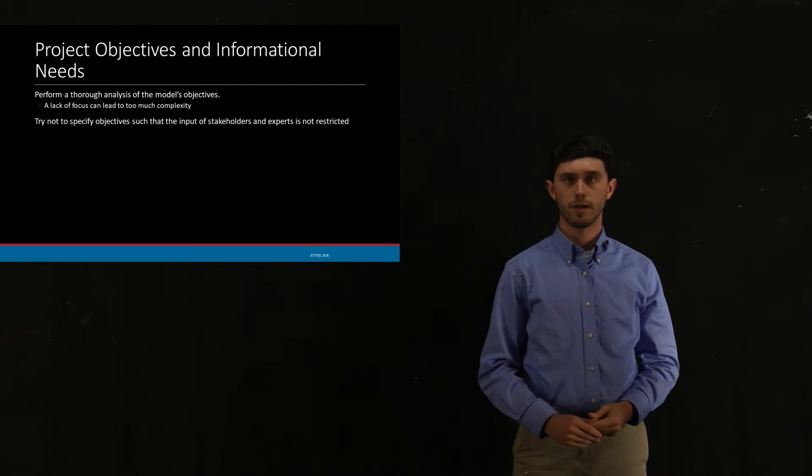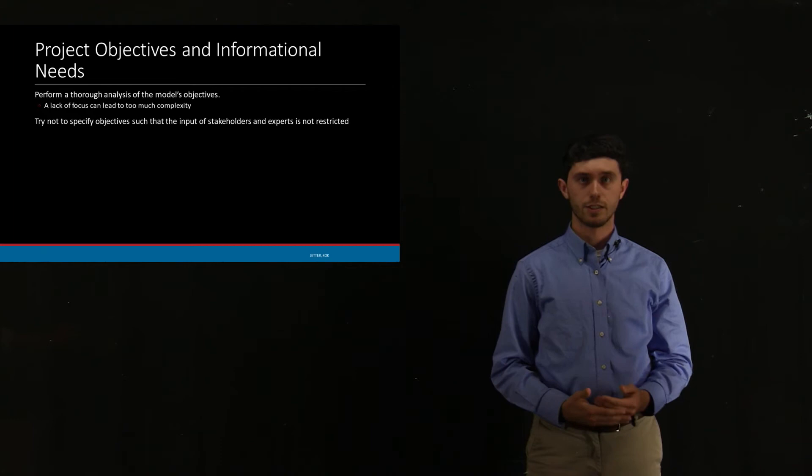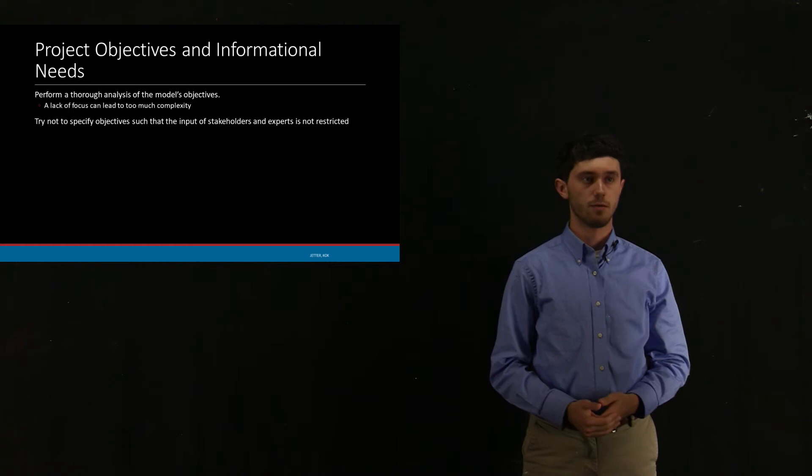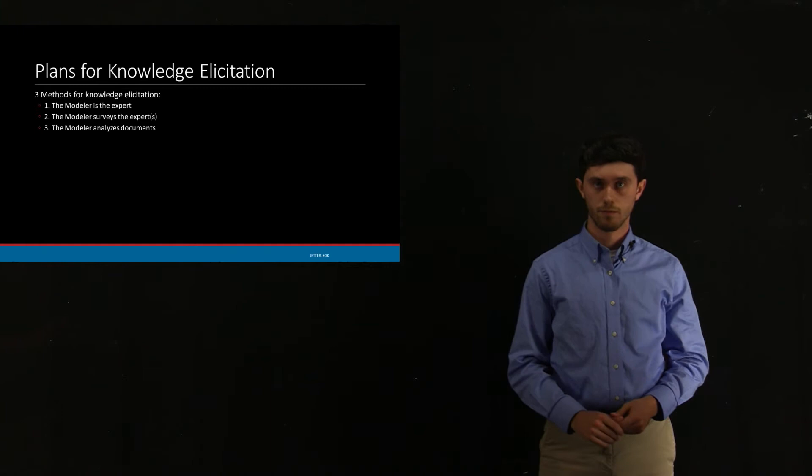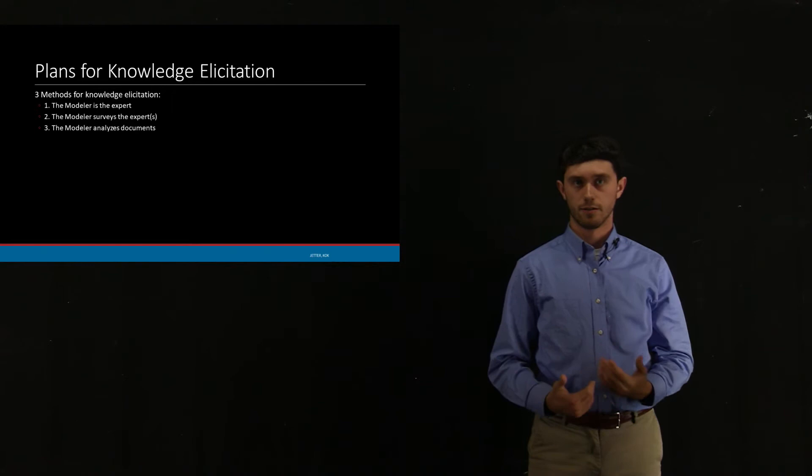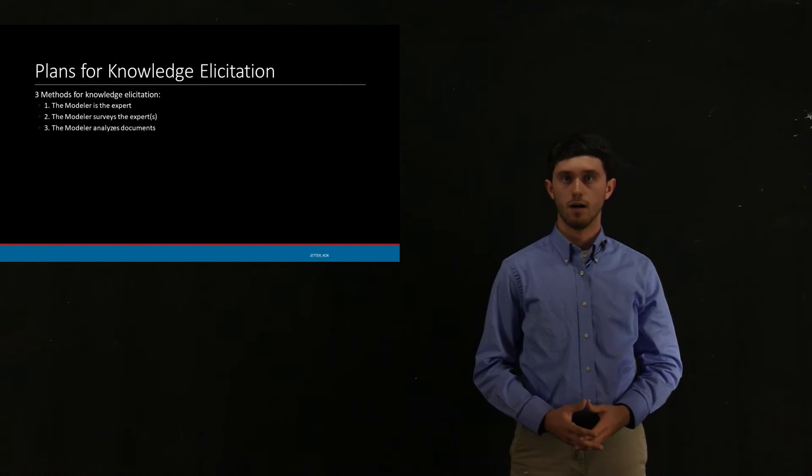Now the project objectives and informational needs. This is where we inquire about problems, desired situations that should remain the same, undesired states that need to be changed, and decision alternatives available in the given situation. So we're just kind of looking at our problem and analyzing it for what it is. And then for our plans for knowledge elicitation, there's a few different ways you can do this. You can have the modeler as the expert, which is typically used in technical publications on FCMs. So stuff you would see in computer science rather than in sociology. This approach is ill-suited for multi-stakeholder studies just because it's very limited in its knowledge.